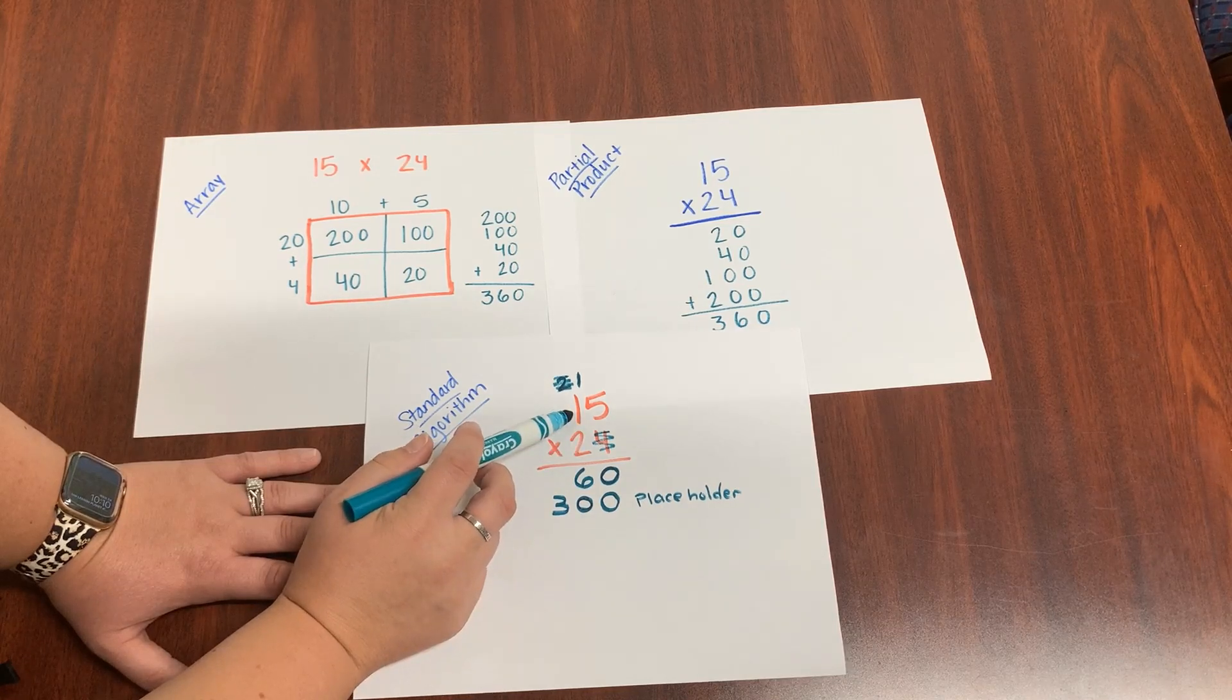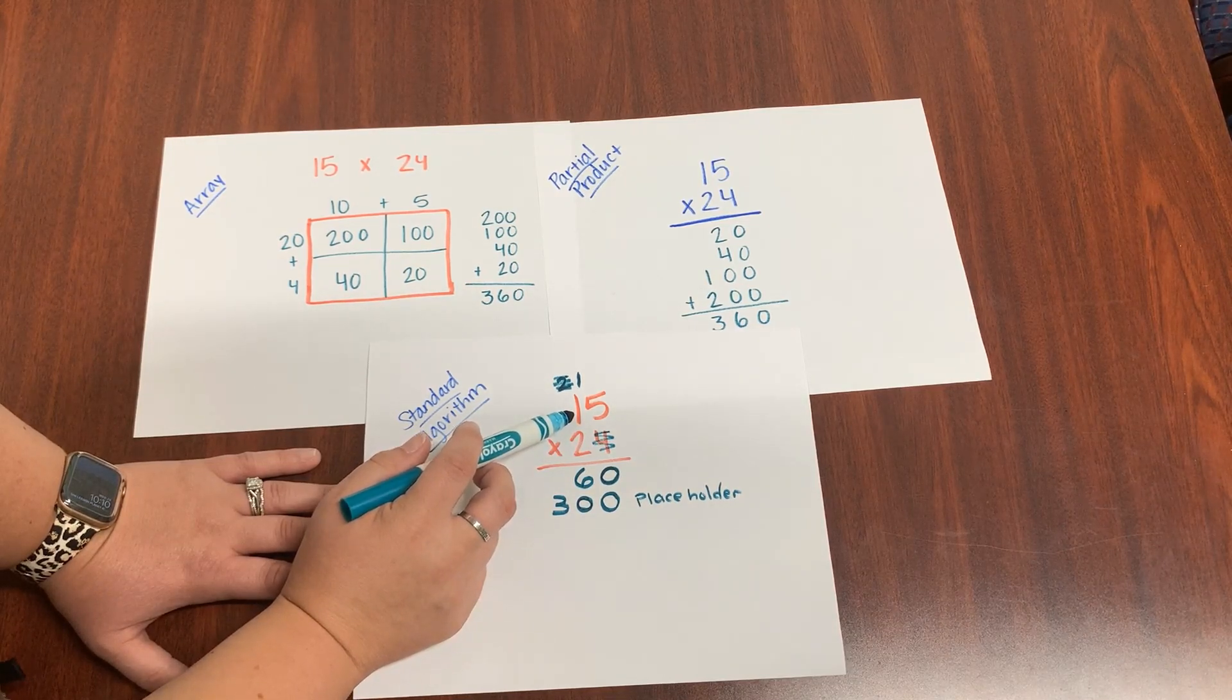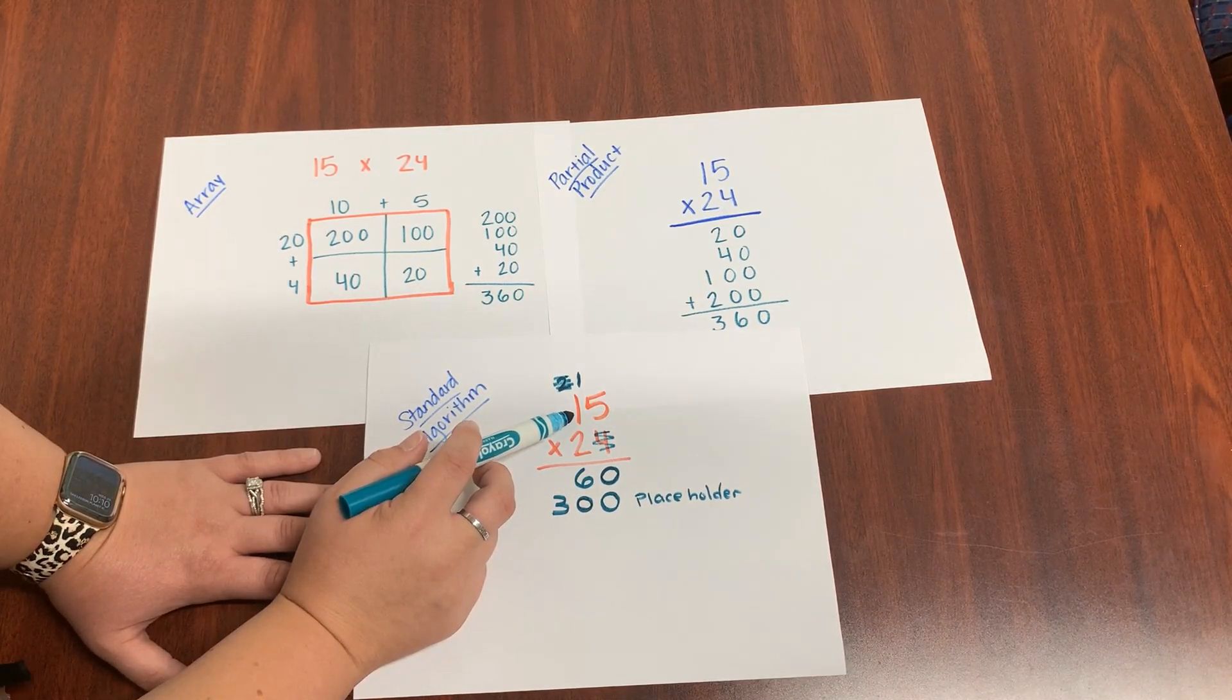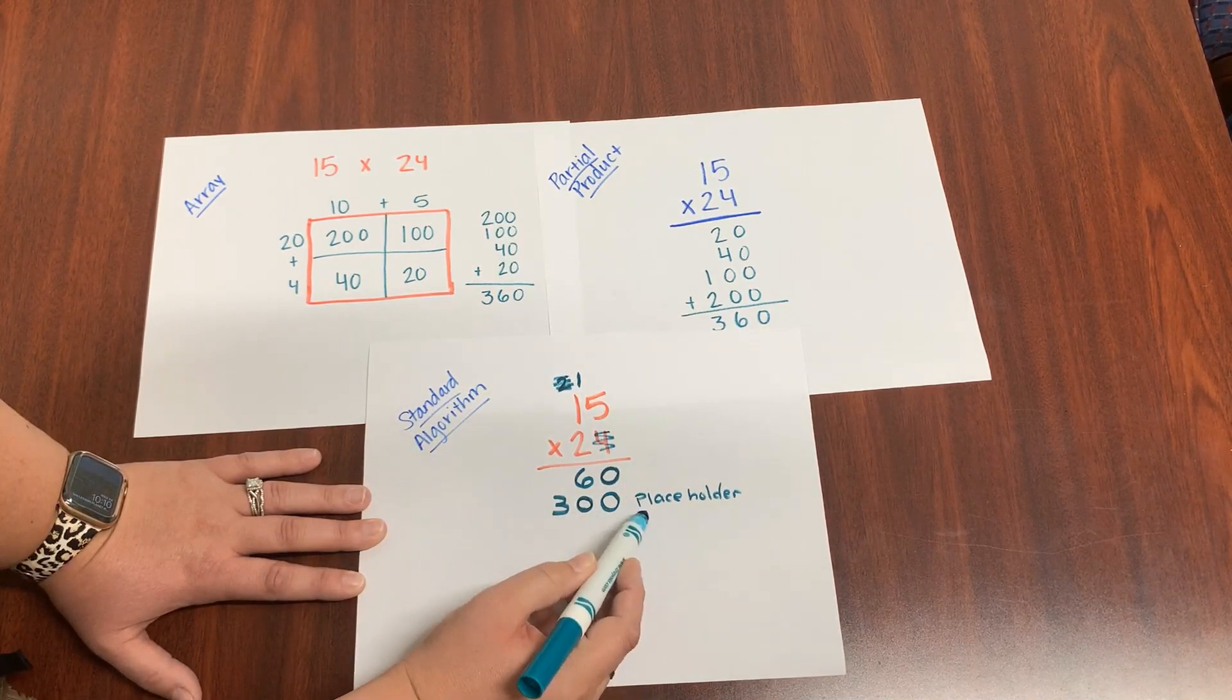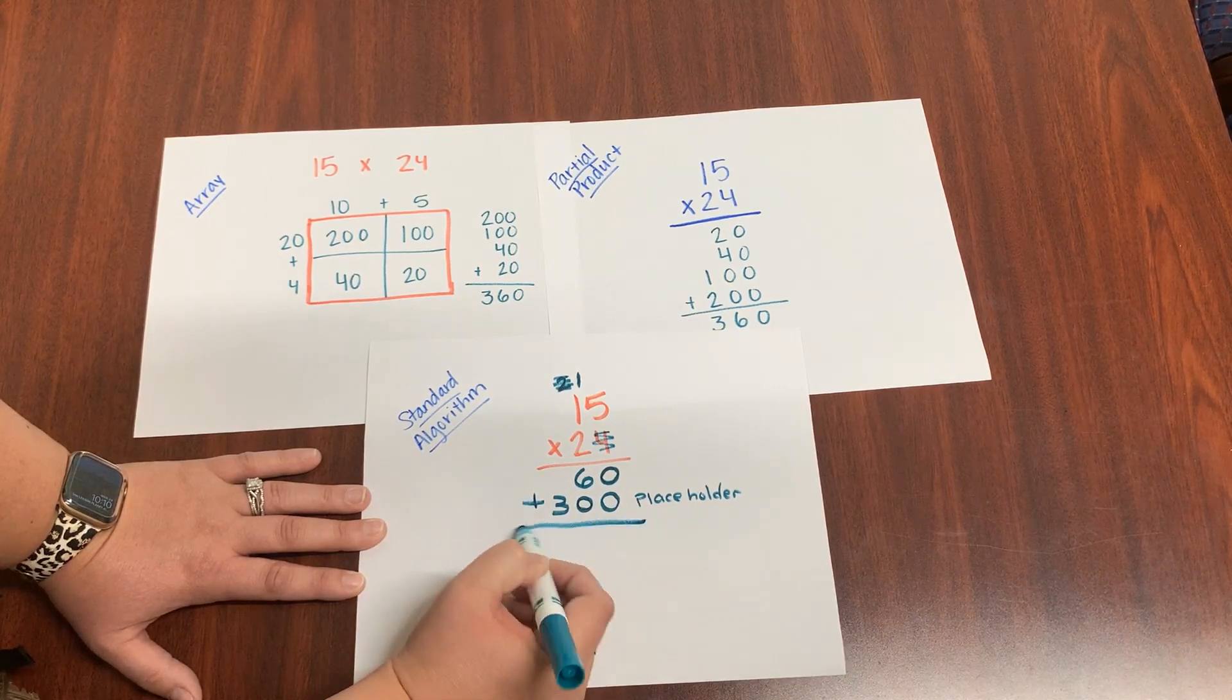Two tens times one ten is two tens. Plus that one extra one makes a three. Two tens times one ten. Think in your mind, two tens times one ten. That's really 200. Plus another ten that we carried over, that's 300. Do you see why it's 300 here now and why we needed that zero?